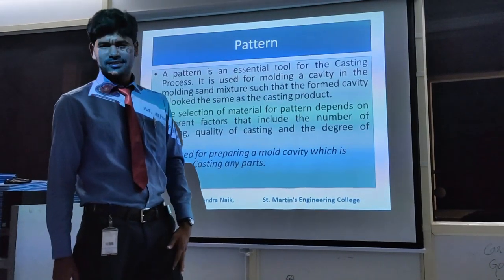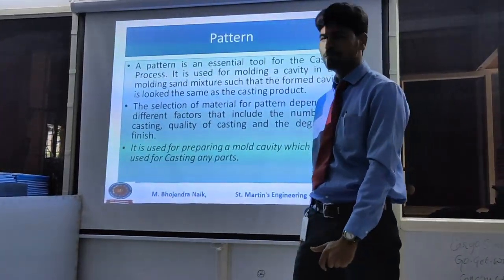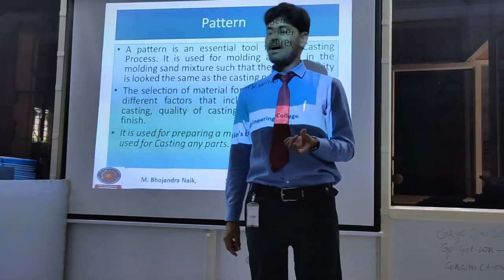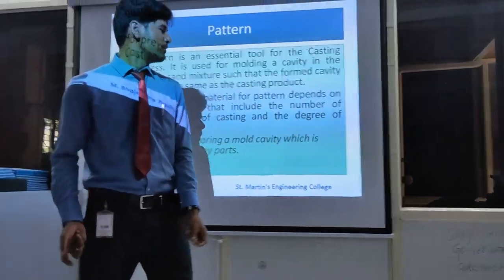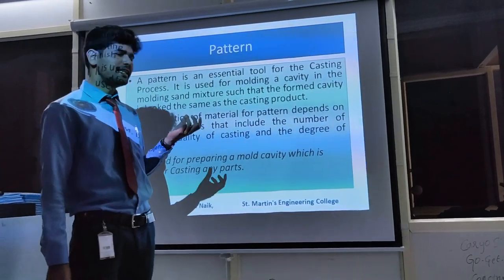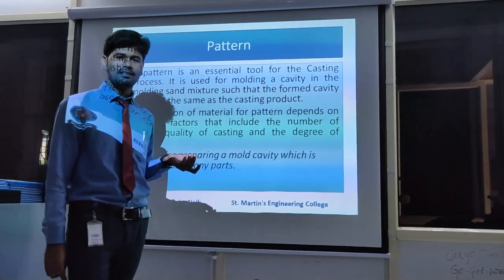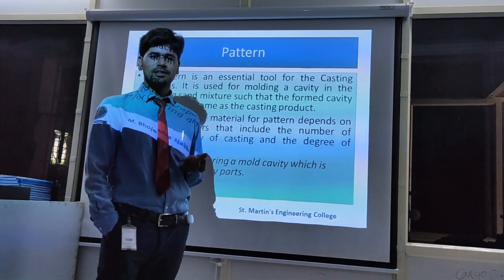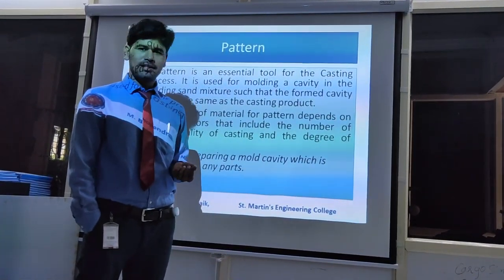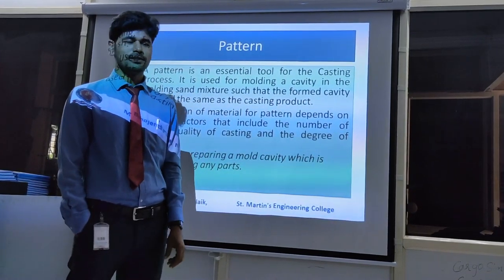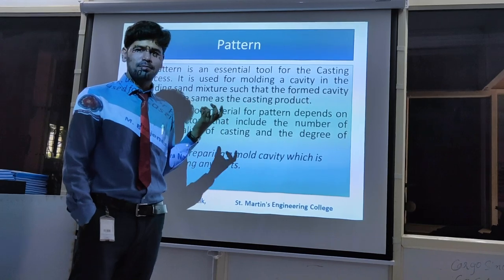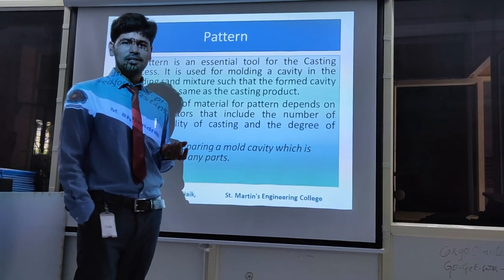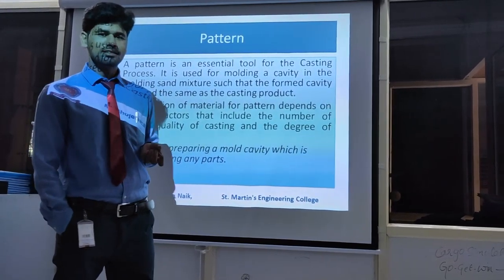First of all, what is the meaning of a pattern? A pattern is a replica used for manufacturing the output of our product. A pattern carries some properties and also has some allowances. For example, if the required dimension is 30mm, when preparing the pattern we have to give more than the required dimension. That's why it carries some allowances. The pattern should also be capable of withstanding high temperature, moisture, and refractoriness.